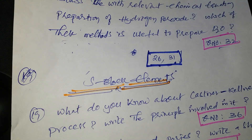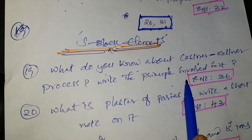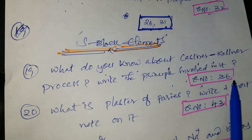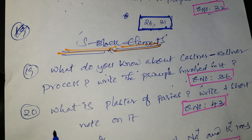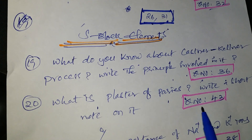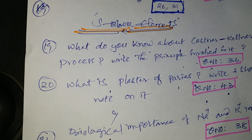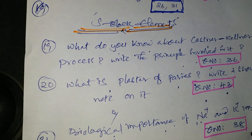Next lesson: S-block elements (Group 1A and 2A). First question: what do you know about the Castner-Kellner process? Write the principle involved — question number 36. Next: what is plaster of Paris? Write a short note on it — question number 43.